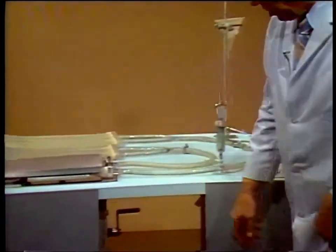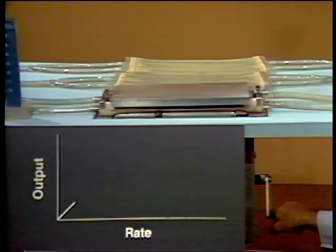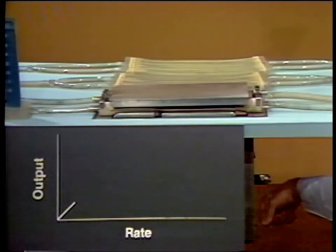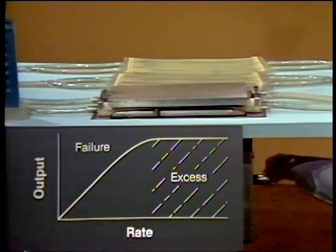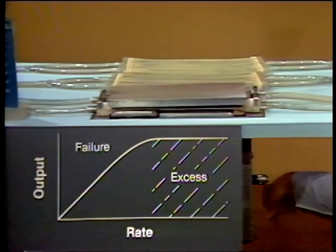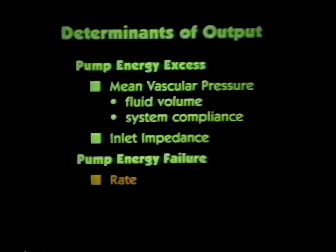One determinant we can already agree on is rate. Right now the pump is in energy failure because of low — in this case zero — rate. If I increase the rate to one beat per minute, the maximal ventricular volume of 100 cc's is ejected and we have a flow of 100 cc's per minute. At two beats per minute, 200 cc's is ejected, and so on until the pump is going fast enough that the ventricles no longer have time to fill completely at this particular mean vascular pressure and inlet impedance. The pump is then back in energy excess. Clinically, we see pump energy failure in complete heart block at a rate of 20 to 30 beats a minute. If we increase the heart rate, there are concomitant increases in cardiac output until about 70 beats a minute, at which time the heart is no longer in power failure. Then further increases in pacemaker rate cause no further increase in cardiac output. So one determinant of cardiac output during myocardial energy failure is rate.